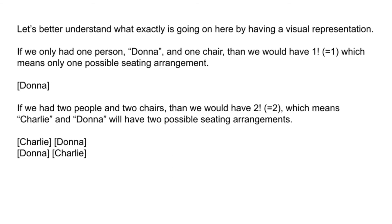Let's better understand this with a visual representation. If we only had 1 person — let's say Donna — and 1 chair, then we would have 1 factorial, which is equal to 1, meaning only 1 possible seating arrangement: 1 chair and 1 Donna.